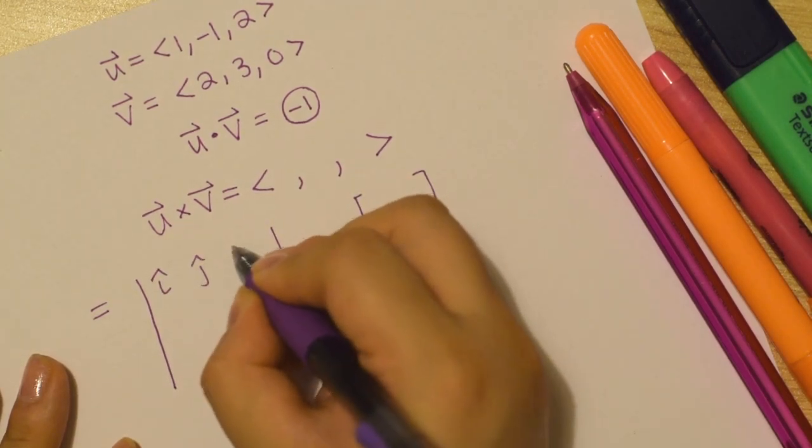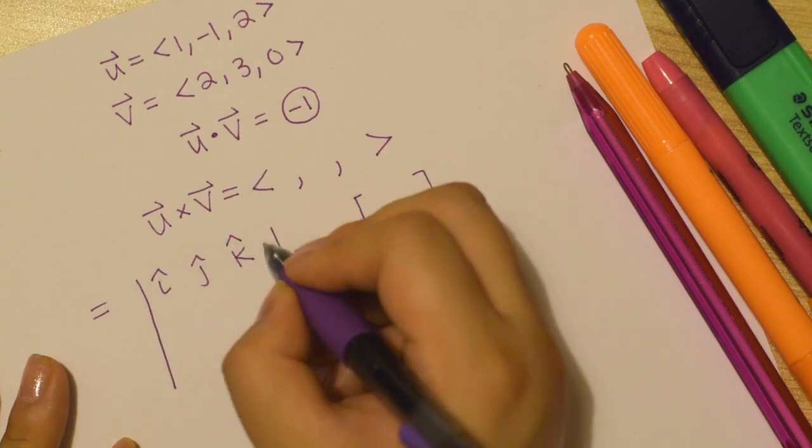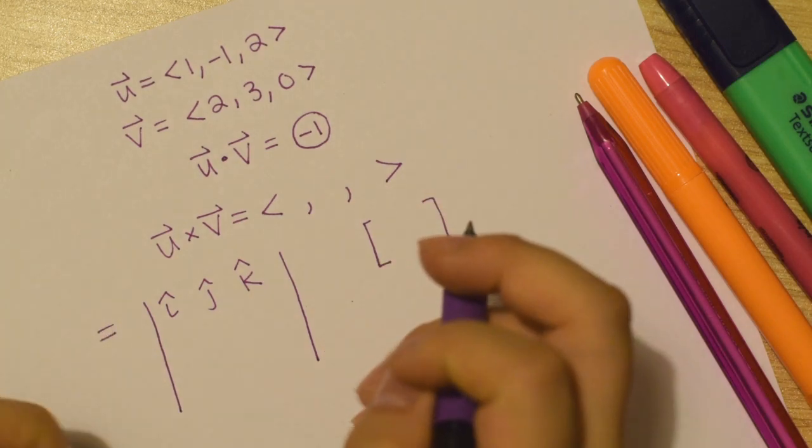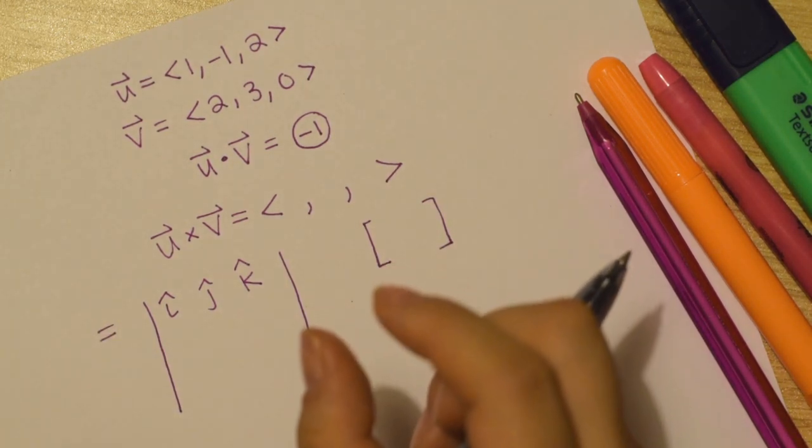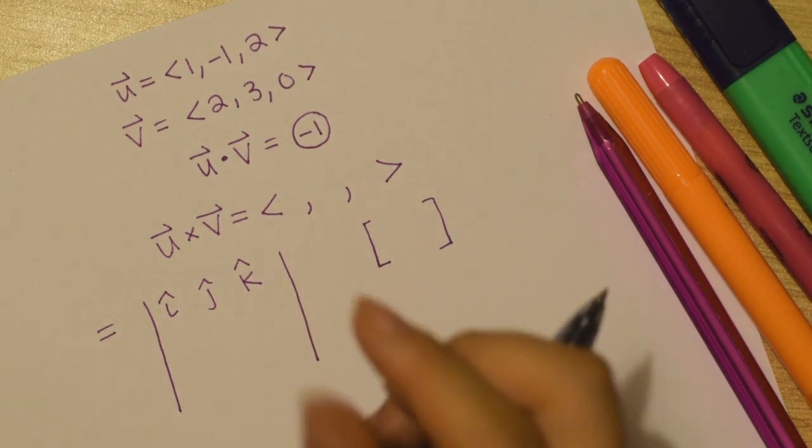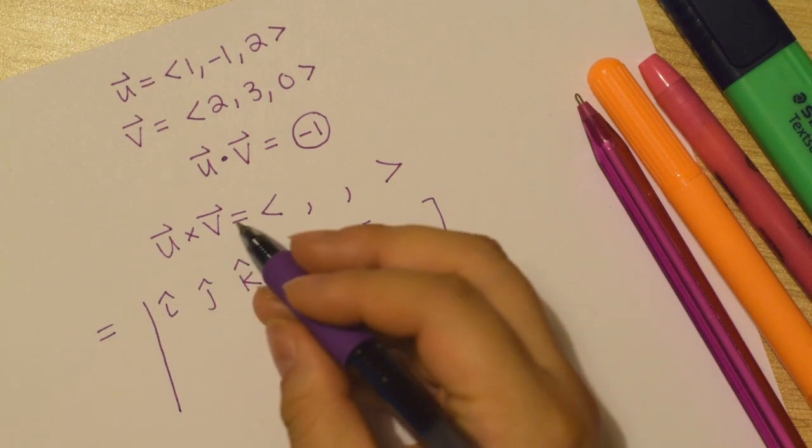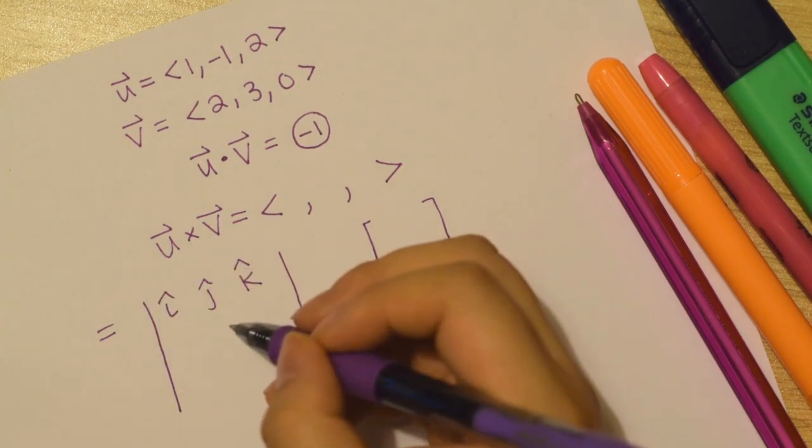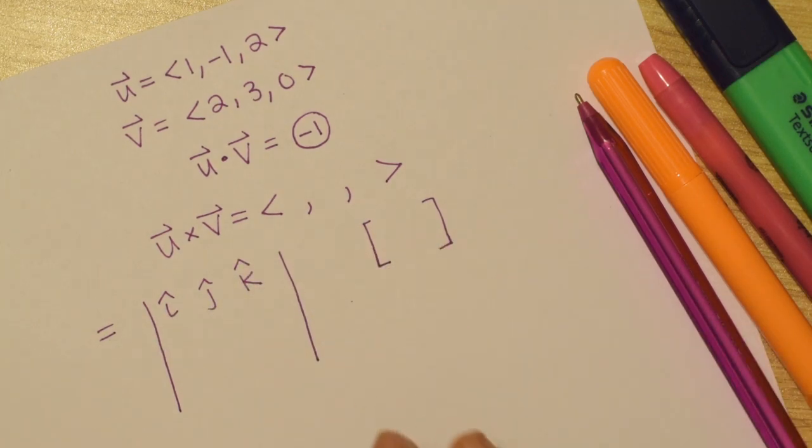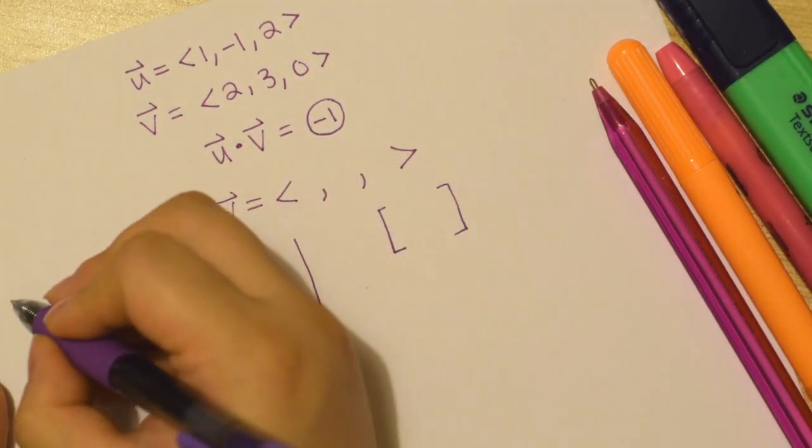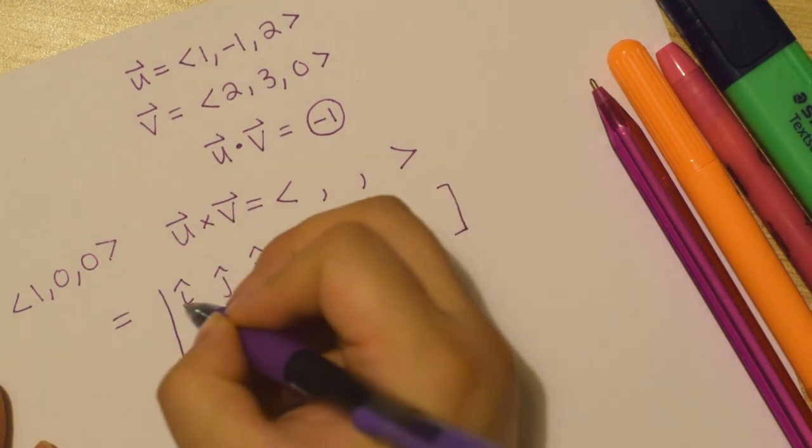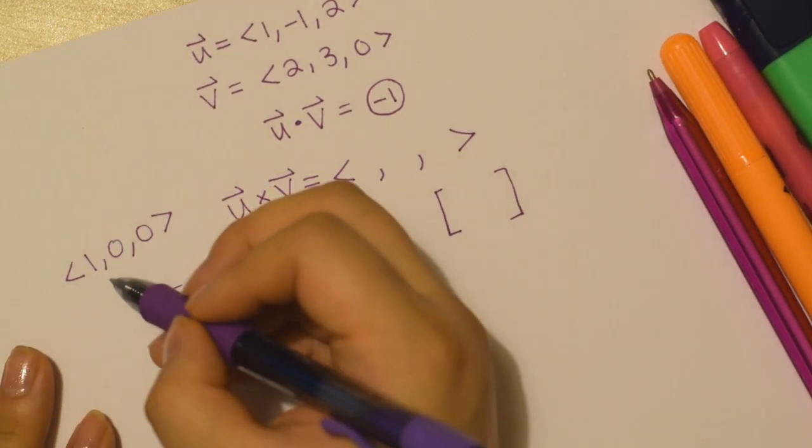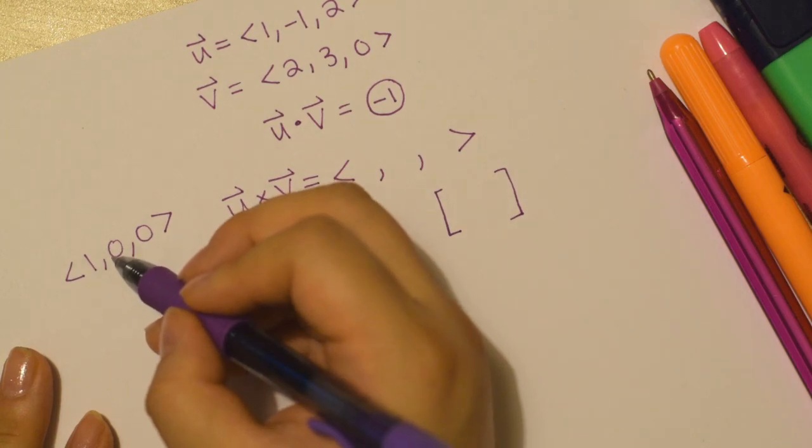The first row is going to be i, j, and k with these cute little hat things. And i, j, and k are vectors. But instead of this, I'm going to do the hats because these are unit vectors, meaning specifically they have a magnitude or a length of one unit. And they are pointing in the direction of the positive x, the positive y, and the positive z axes.